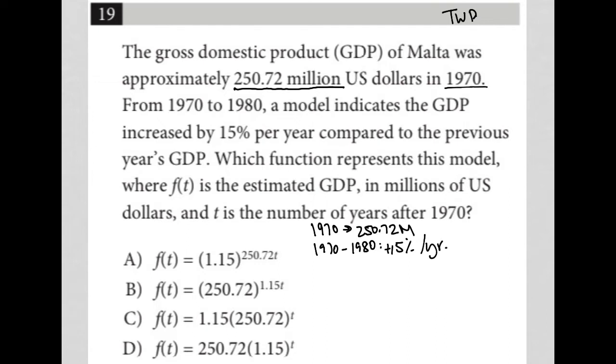Which function represents this model where f(t) is the estimated GDP in millions of U.S. dollars and t is the number of years after 1970? So the strategy that I'm going to use here is called plug in your own number.